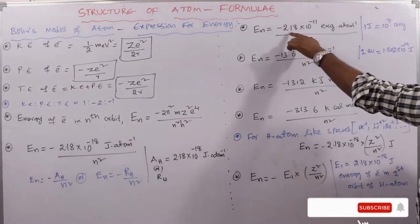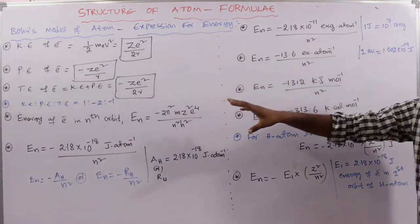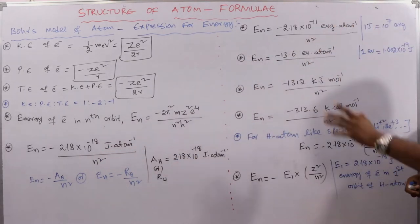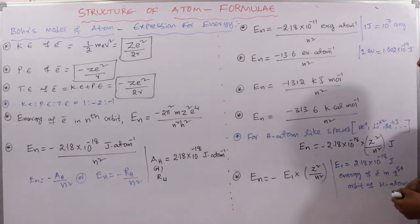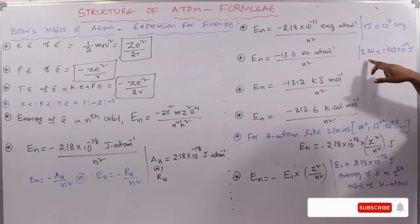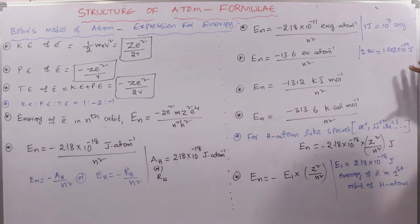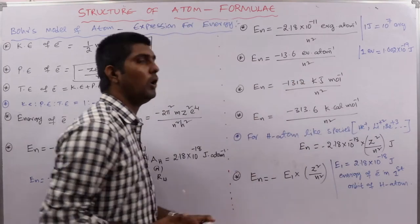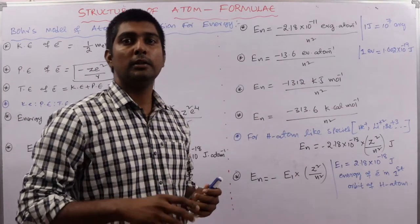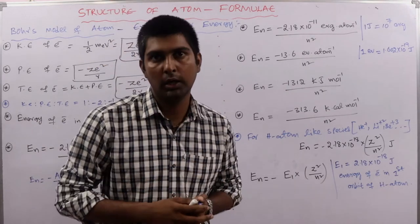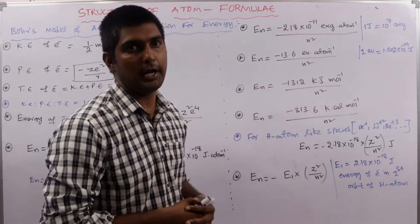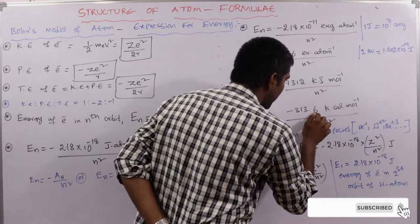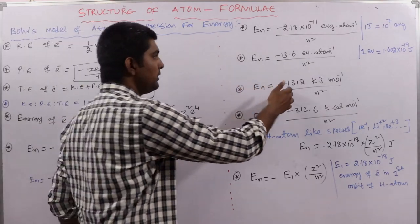In ergs: RH = 2.18 × 10⁻¹¹ erg per atom (since 1 joule = 10⁷ ergs). In electron volts: En = −13.6/n² eV per atom. Per mole: En = −1312/n² kJ/mol, or −313.6/n² kcal/mol.